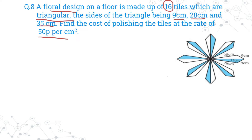Question 8: A floral design on a floor is made up of 16 tiles which are triangular, with sides 9 cm, 28 cm, and 35 cm. Find the cost of polishing the tiles at a rate of 50 paise per cm². There are 2 tiles per petal of the flower, and 8 petals, which makes 16 tiles in total.